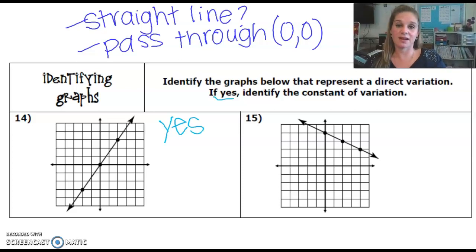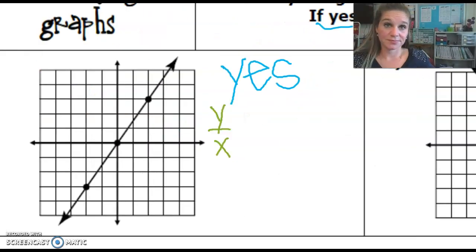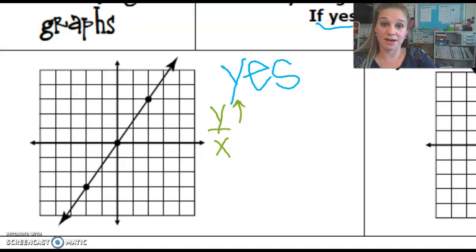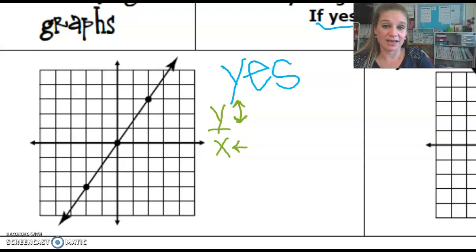It says if yes, then identify that constant of variation. So in order to find our constant of variation, we are going to look at how much change there is in y as compared to how much change there is in x. Our y value is going to be indicated by the amount of change going up and down, and our x value is going to be found by how much change we have going from side to side.